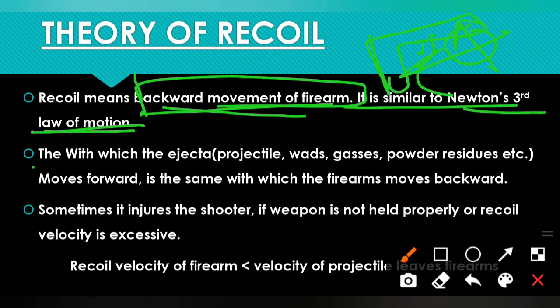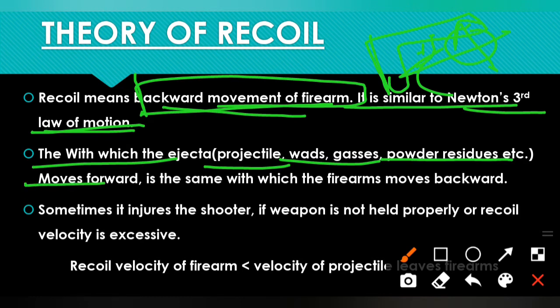The velocity with which the ejecta — ejecta means projectiles, wads, gases, powder residues — moves forward is the same velocity with which the firearm moves backward. The ejecta velocity moves forward, and with the same velocity the firearm moves backward.